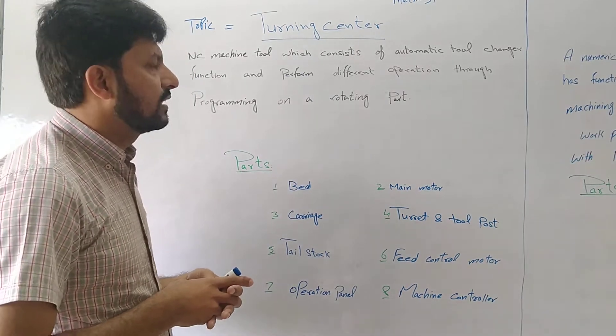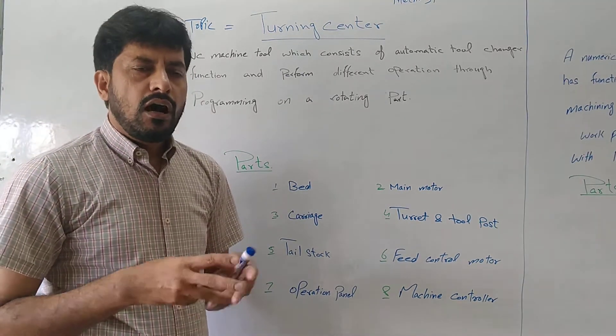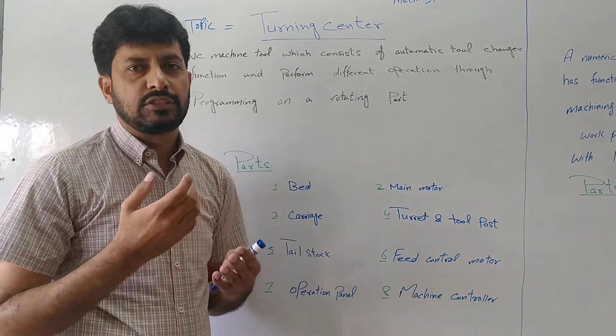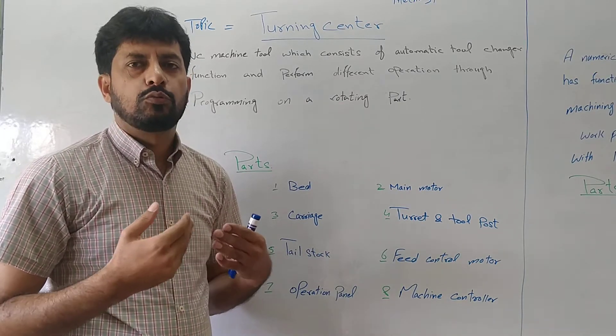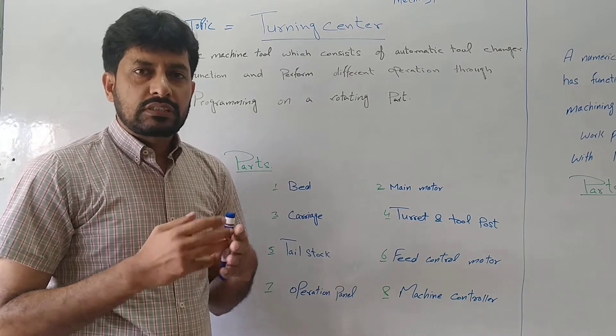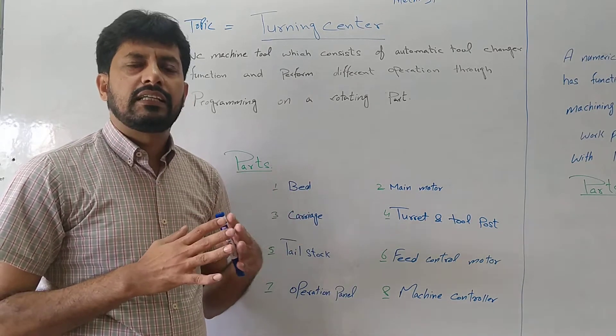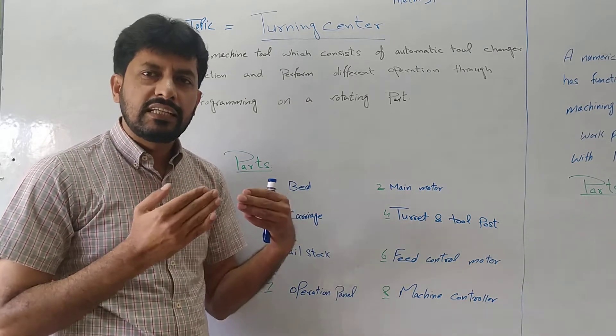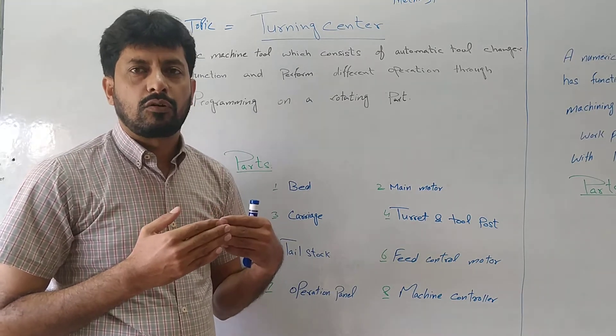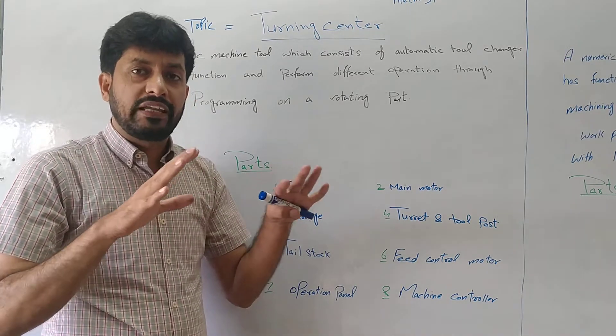First of all, turning center. You have written a word called turning machine. A simple conventional machine is called turning machine or a lathe machine. The system is the same as it is, but it is called CNC. It is called numerical control. The whole system is automatically controlled.